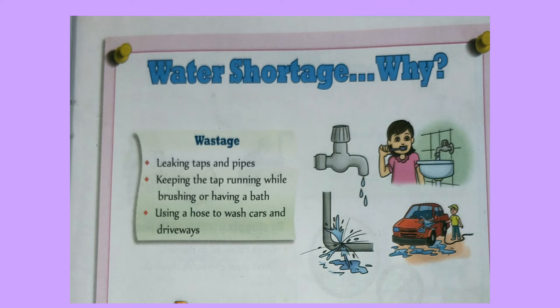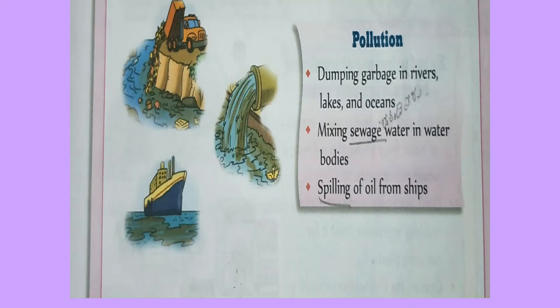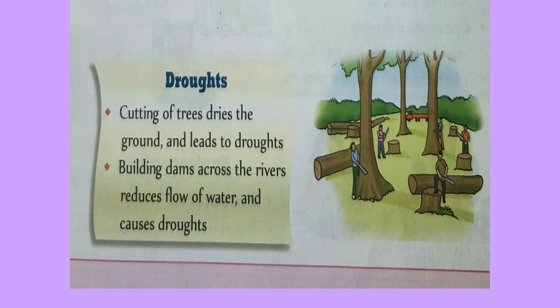Water shortage — why? Leaking taps and pipes. Keeping the tap running while brushing or having a bath. Using a hose to wash cars and driveways. Pollution: dumping garbage in rivers, lakes and oceans, mixing sewage water in water bodies, spilling of oil from ships. Droughts: cutting of trees dries the ground and leads to droughts, building dams across the rivers reduces flow of water and causes droughts.